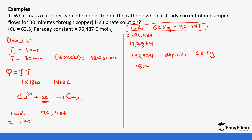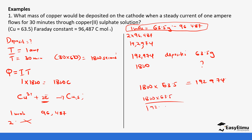The actual quantity of electricity is 1,800 coulombs. So we calculate: mass = (1,800 × 63.5) / 192,974 = 0.5923 grams. That is the mass of copper deposited. The question can also ask for quantity, current, or time — it depends on what is given.